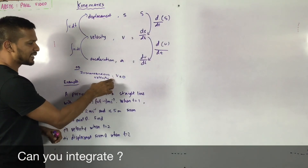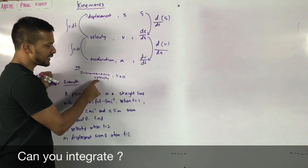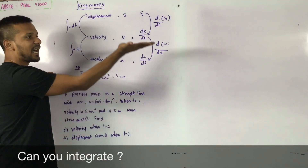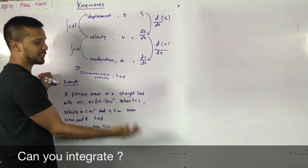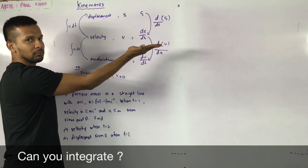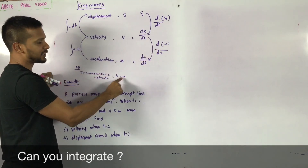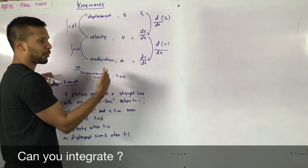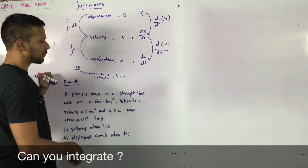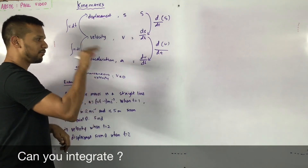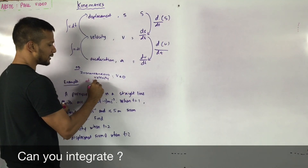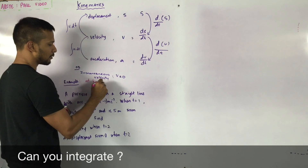One important thing to remember: instantaneous velocity occurs when v is zero. If a particle is moving up, at its highest point it experiences instantaneous velocity. It goes up, and at that highest point its velocity will be zero — that's called instantaneous velocity, where the particle is at rest for a short period of time. The particle stops there, and v is zero at the highest point.